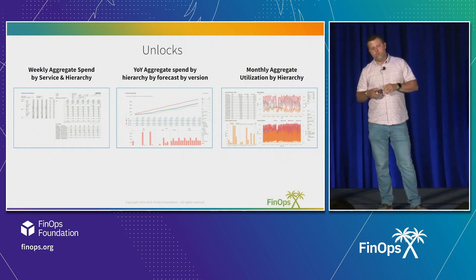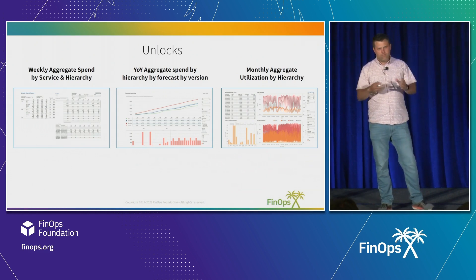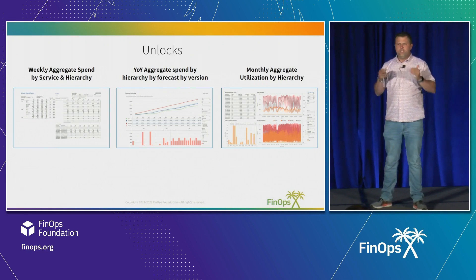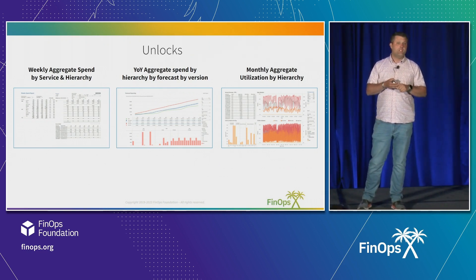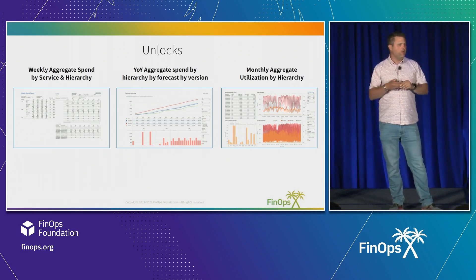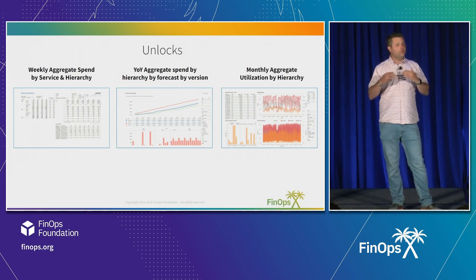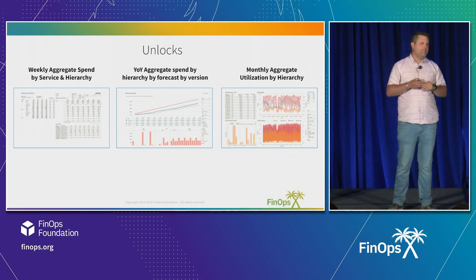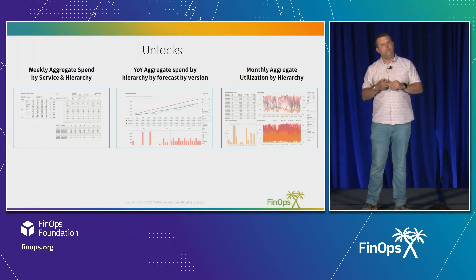Then it goes into the next report: year-over-year aggregate spend by hierarchy, by forecast, by version. The hierarchy — a set of accounts — could be your dev, your non-prod, or your production. But there's also the forecast: what did you anticipate you were going to spend? Then by version. There are weekly and monthly forecast meetings where people try to make commentary about whether a service is going to grow or decrease. When those decisions are made, you need to lock them in a forecast. When you lock them in, you need to understand what the trend of the forecast changed over time. You can go back to a version and say, we were planning on a new product — that product's no longer there — and we can see the forecast trend downwards.